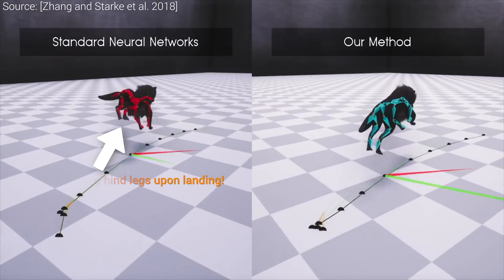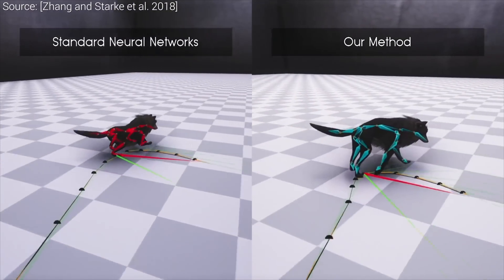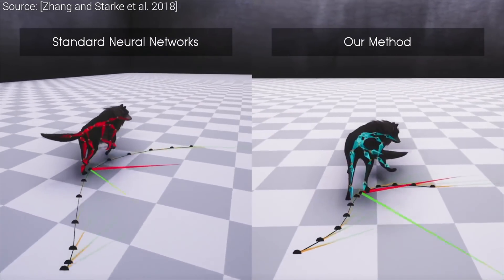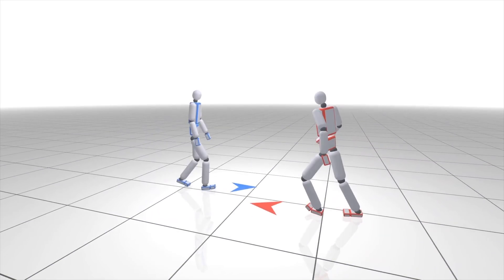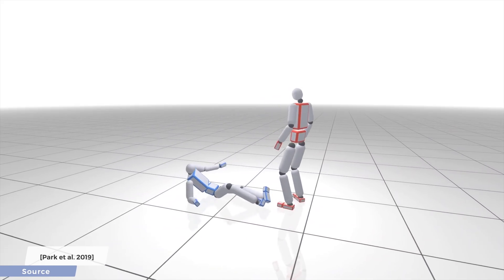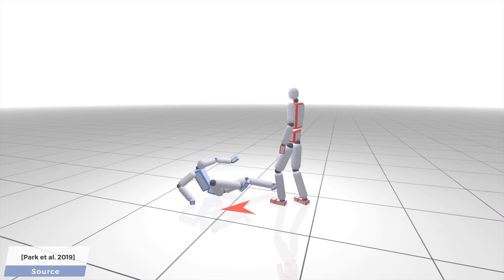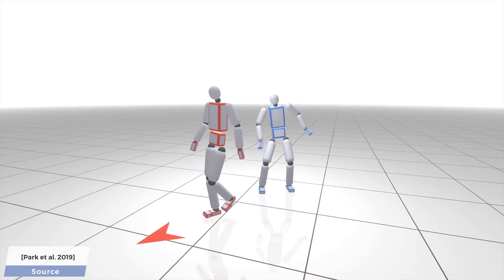This new paper continues research in this direction by proposing a technique that is also capable of interacting with its environment or other characters. For instance, they can punch each other, and after the punch, they can recover from undesirable positions, and more.